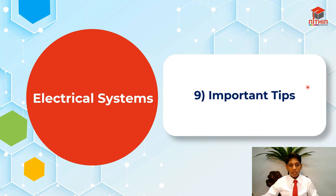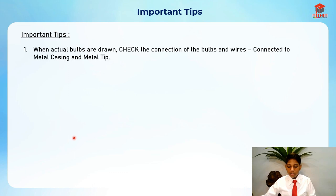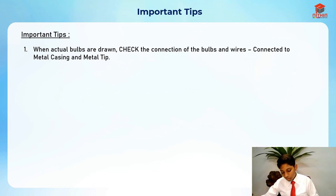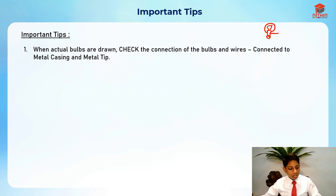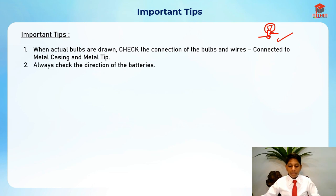Here are important tips for the electrical system topic. First tip: when actual bulbs are drawn in the circuit, check the connection of bulbs and wires connected to the metal casing and metal tip. The wires need to be connected to the metal casing and metal tip with no gaps in between.